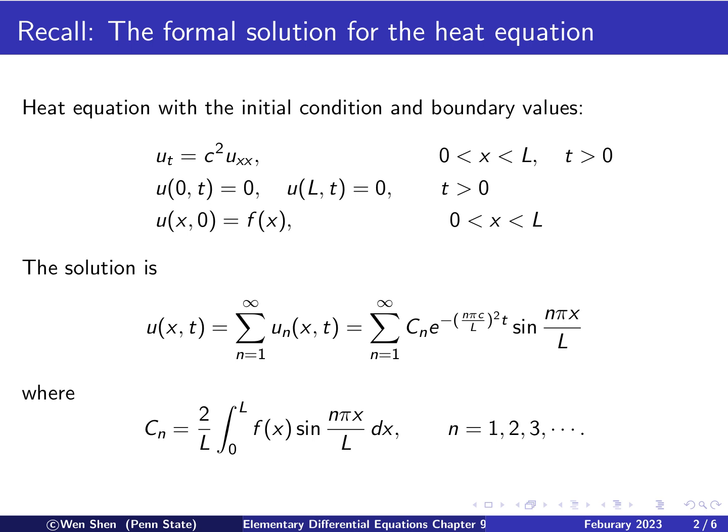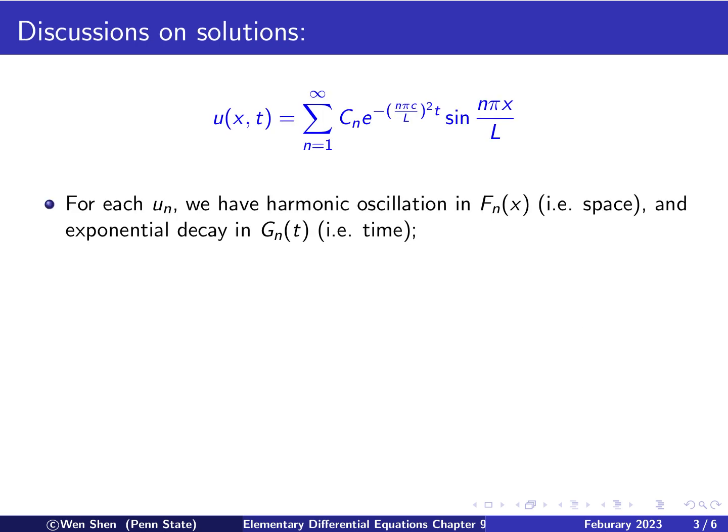So let's take a look at this form of the formal solution and observe some properties. So first we observe that for each un, what we have is a sine function in x. This is Fn of x, which is a sine function, and these are called harmonic oscillation. And then in time, the Gn of t function here is an exponential decay.